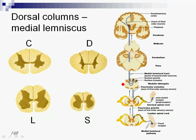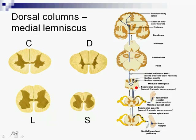Like before, we've got the first neuron, which is situated in the dorsal root ganglion. It will then ascend. This time the second neurons are not on the same level — they are situated in the medulla oblongata. So this first neuron will have to ascend and send its axon to the medulla oblongata.